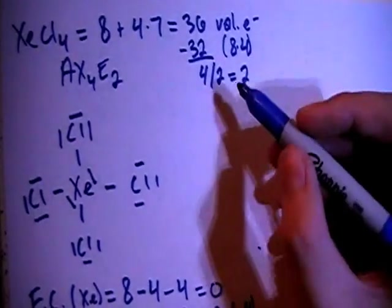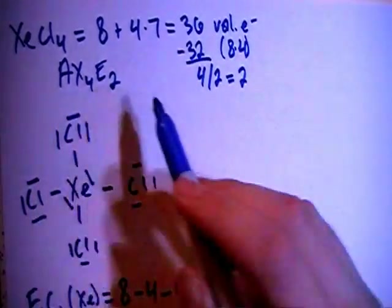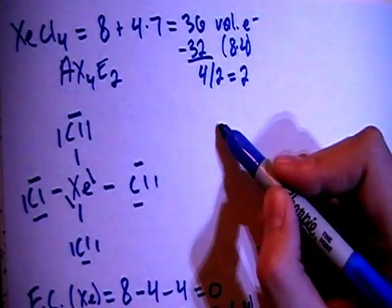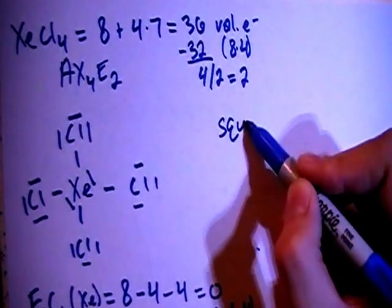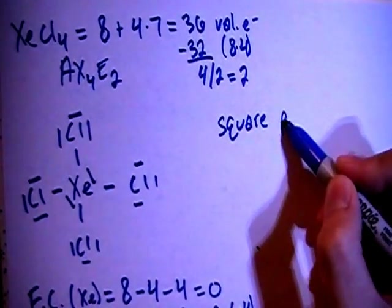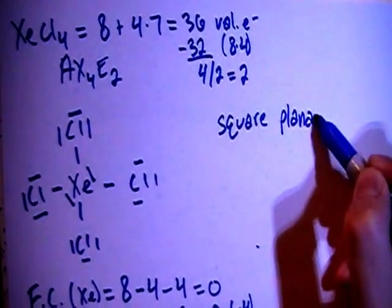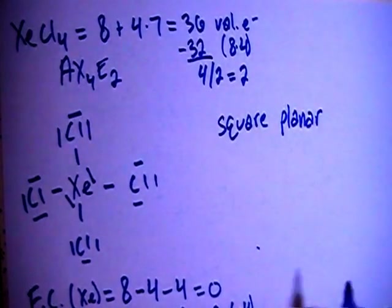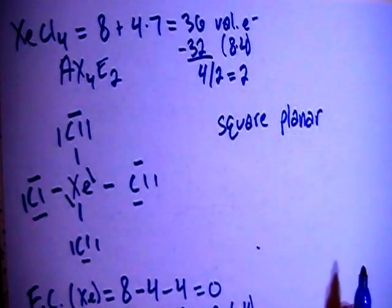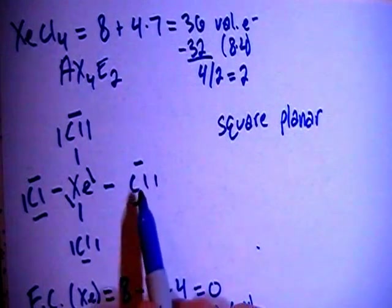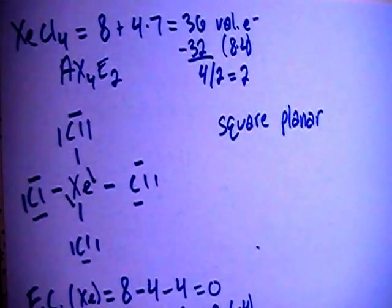Now let's talk about the shape. With the AX4E2, this is going to be a square planar shape. You have a flat square with one electron group above and one below, and each of these four peripheral atoms will make up the corners of the square.